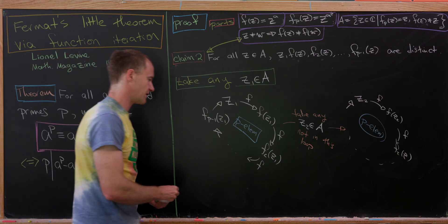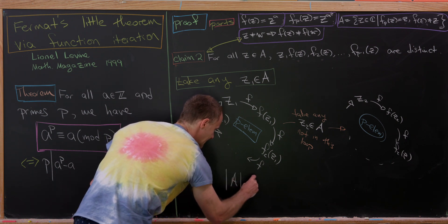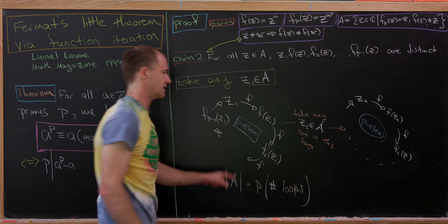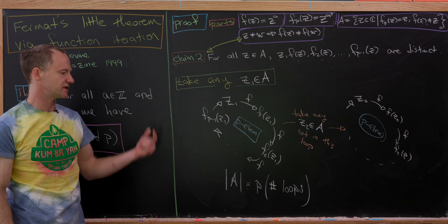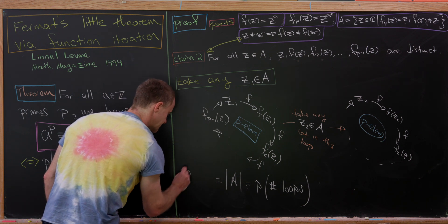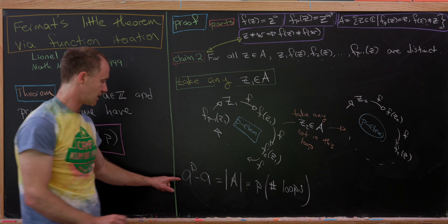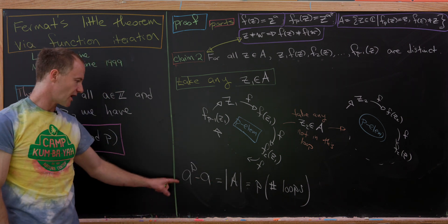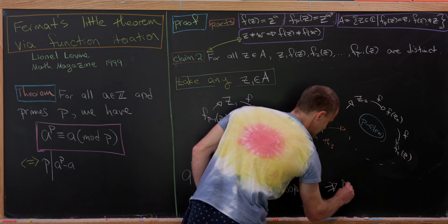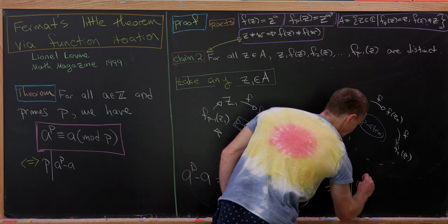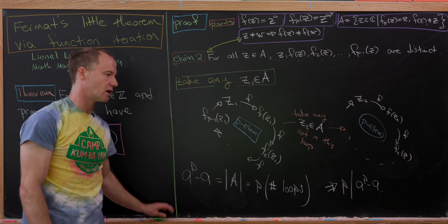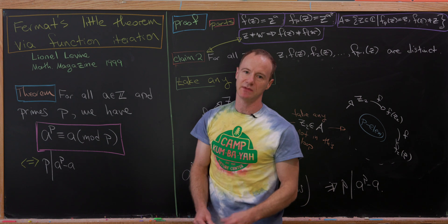Okay. So now let's finish this thing off. So we have the size of A is equal to P times the number of loops. Great. Well, I think that's pretty clear because eventually we'll exhaust all of A. But then on the other hand, earlier we counted that the size of A was equal to A to the P minus A. So reading from the extreme left to the extreme right, we have A to the P minus A is equal to P times something. But that's exactly the same thing as saying that P divides A to the P minus A, which is the same thing as saying that A to the P is congruent to A mod P, which was the statement in Fermat's Little Theorem.